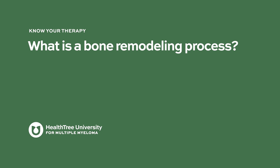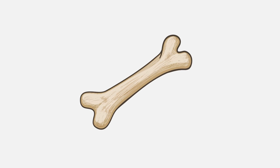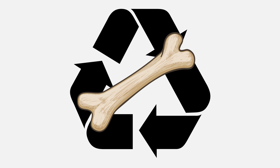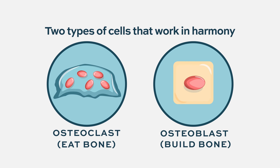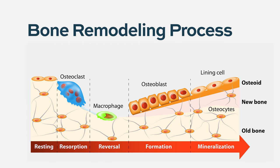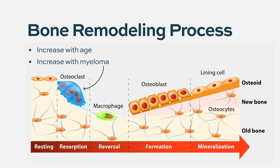What is the bone remodeling process? Bones are constantly turning over, which is a very important feature of normal bone metabolism. We have two types of cells that work in harmony: osteoclasts and osteoblasts. Depending on the signals they receive from the bone environment, one or the other is activated. With age, we have more osteoclasts that destroy bone than osteoblasts. In myeloma it's the same — the myeloma itself can produce substances that stimulate osteoclasts, making bone targeting agents very important.